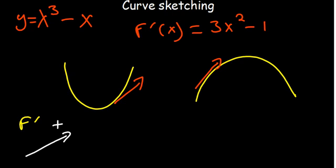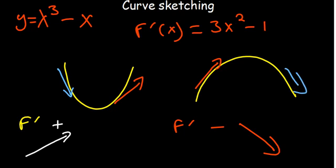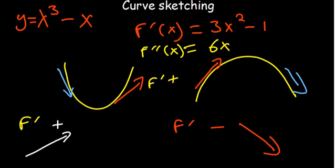Where the first derivative is negative, the function is decreasing. Looking at the two curves, you can see the decreasing parts. What differentiates the two curves — whether it's a minimum or a maximum — is decided by the second derivative. The second derivative requires you to differentiate the first derivative, which in this case gives us 6x.